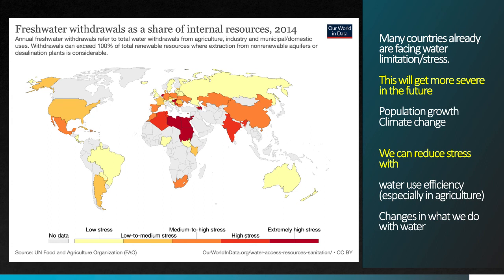But we can actually do something about this. We can reduce water stress by increasing water use efficiency, especially in agriculture — and that's actually part of the story for why per capita water use is going down. We can also change what we do with water, as shown on the next slide.